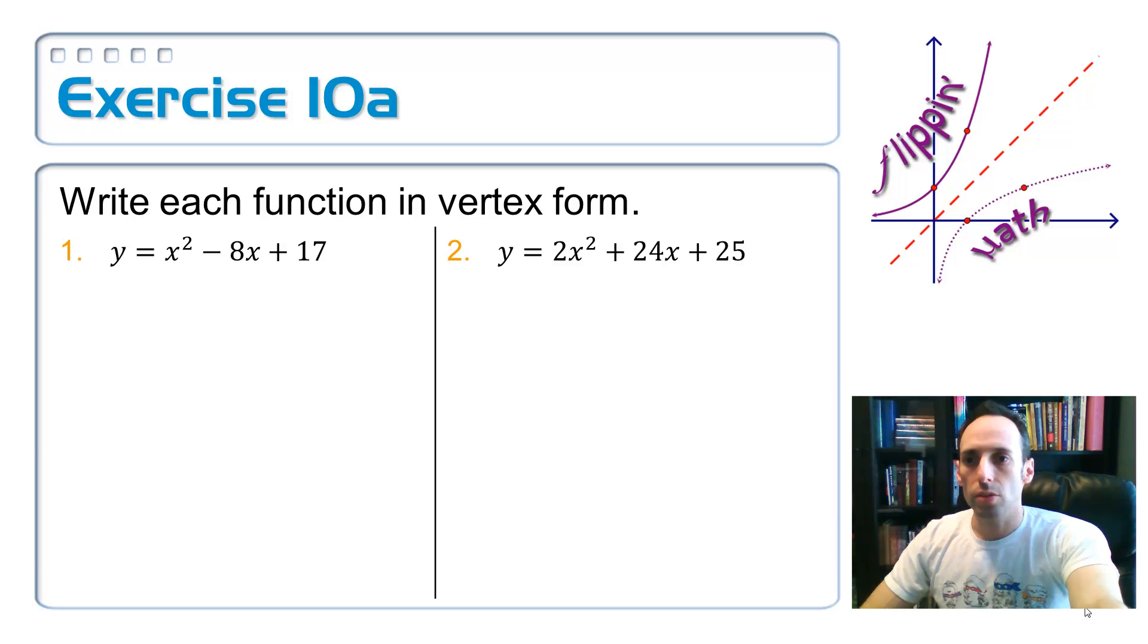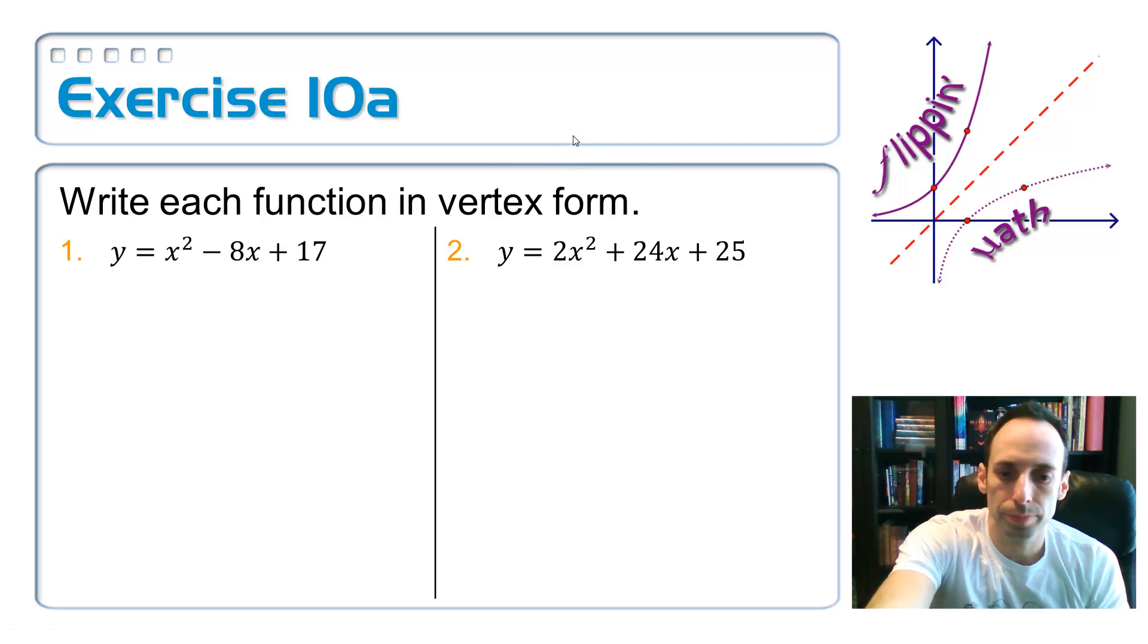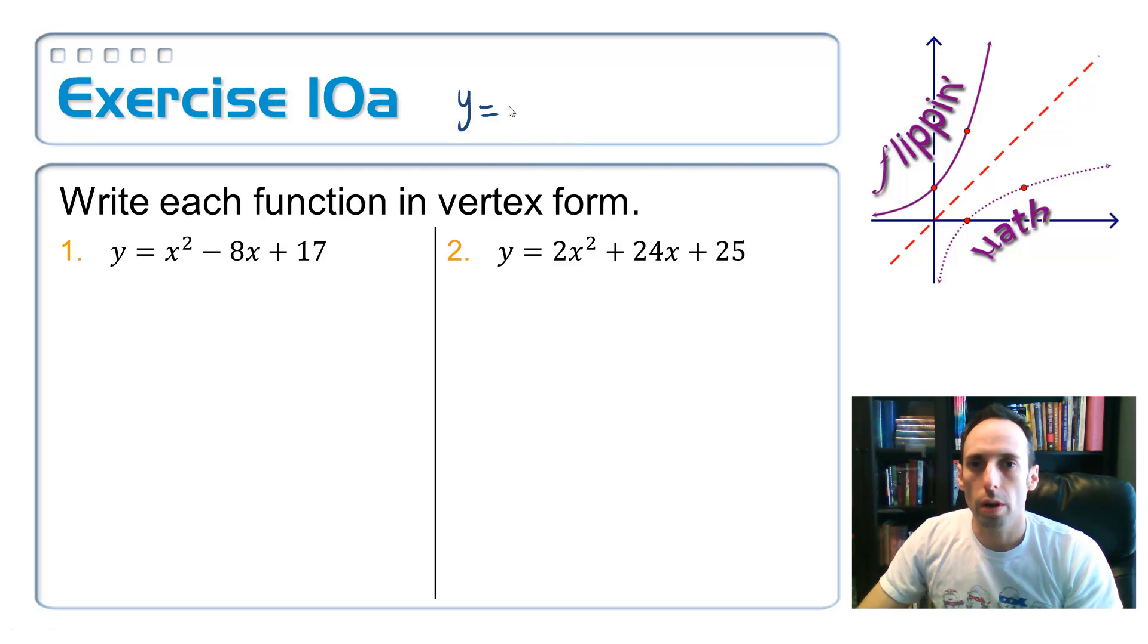Here's the last one. Let's write our function in vertex form. So vertex form looks like this: y equals a times x minus h squared plus k.